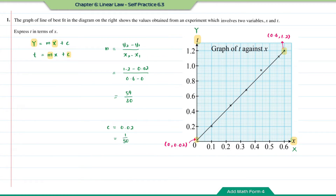Now that we have the values of M and C, we substitute them into the equation. So T is equal to 59 over 30 times X plus 1 over 50. Since T is already the subject of the equation, we have expressed T in terms of X.